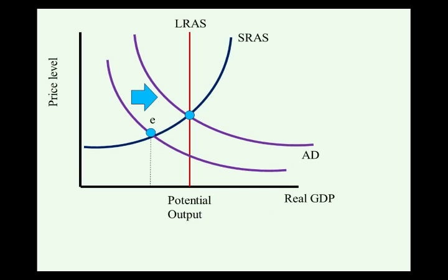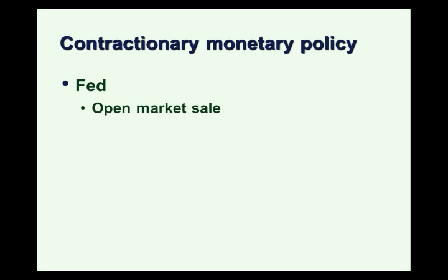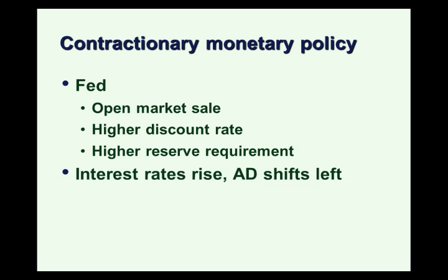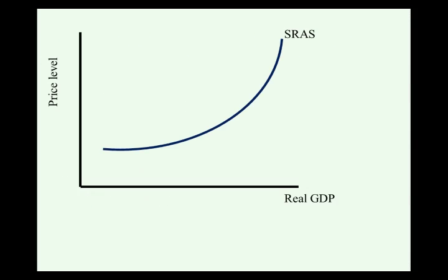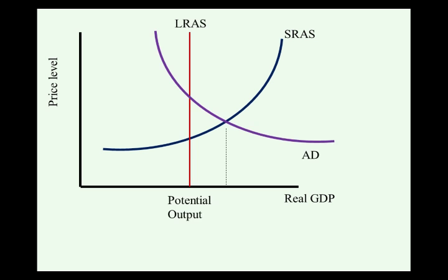Contractionary monetary policy works in the opposite direction. We do an open market sale, raise discount rates, or raise reserve requirements. All of those push interest rates higher, discourage spending, and shift aggregate demand to the left. So contractionary monetary policy would be used to close an expansionary gap — in other words, put the brakes on an economy that's overheating. In the graph, contractionary monetary policy shifts aggregate demand to the left for a new equilibrium at potential output.